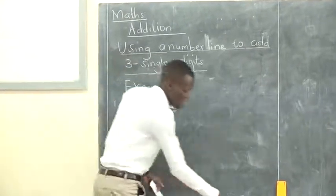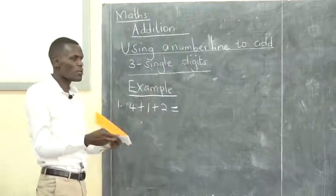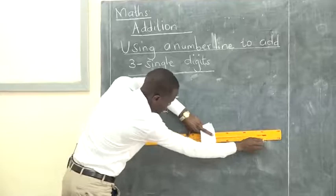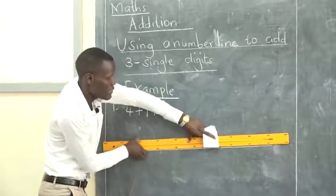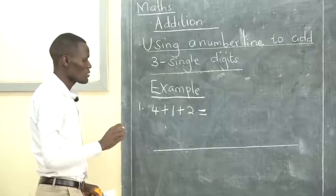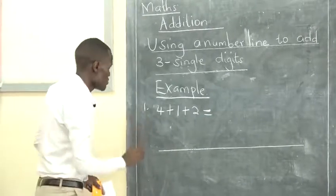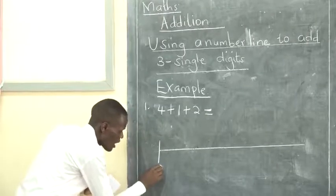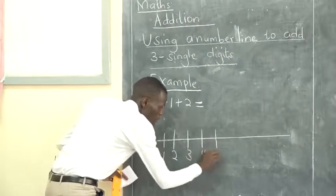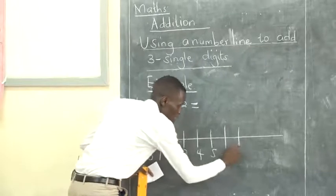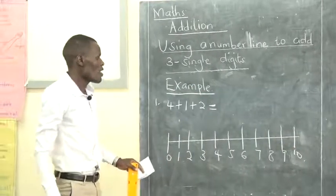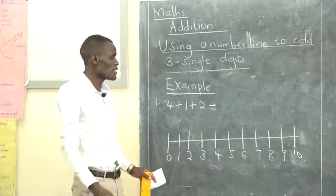The first thing we are supposed to do is take your ruler — always use a ruler, not freehand — and draw a straight line. This is my straight line. After you draw your straight line, show your numbers on the number line. We always start from zero: zero, one, two, three, four, five, six, seven, eight, nine, ten. You can continue up to fifteen or twenty.